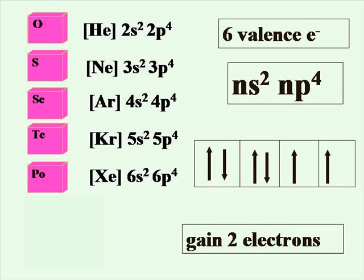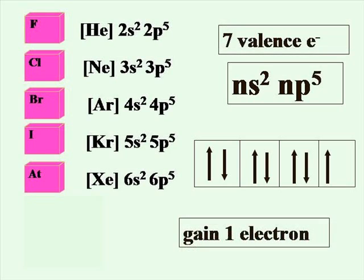Oxygen's group will gain two electrons to fill their valence shell. The halogens are only one electron shy of being a full S and P. They will certainly gain this electron easily to have the noble gas electron configuration.